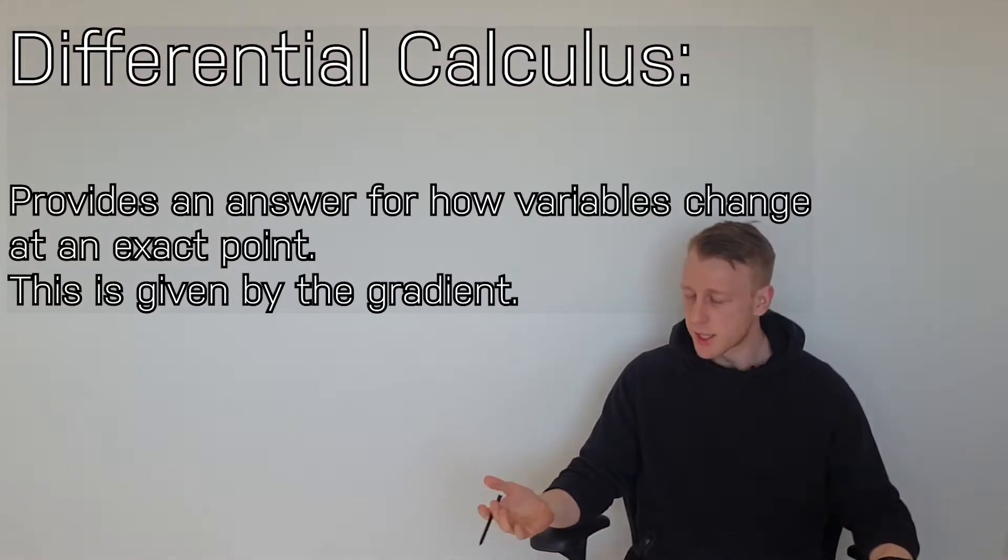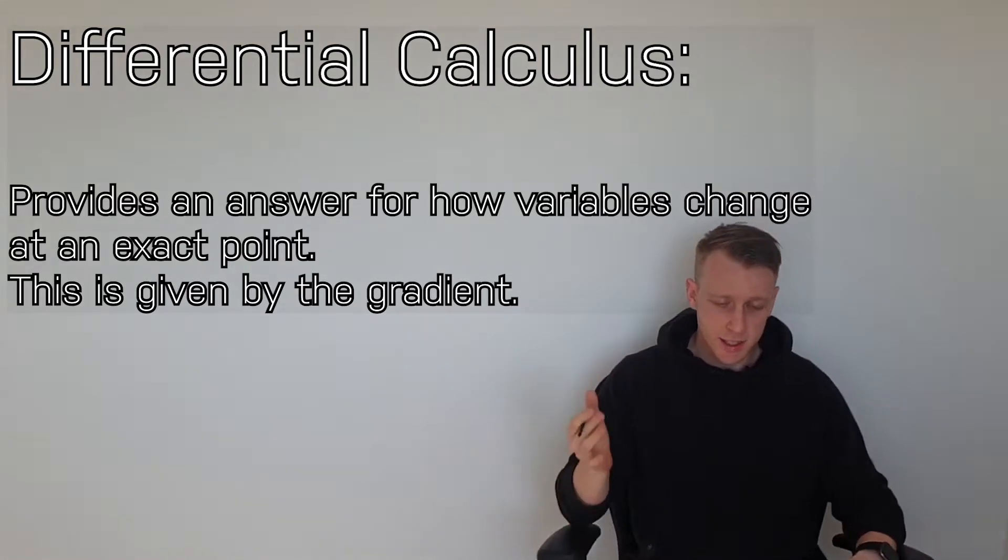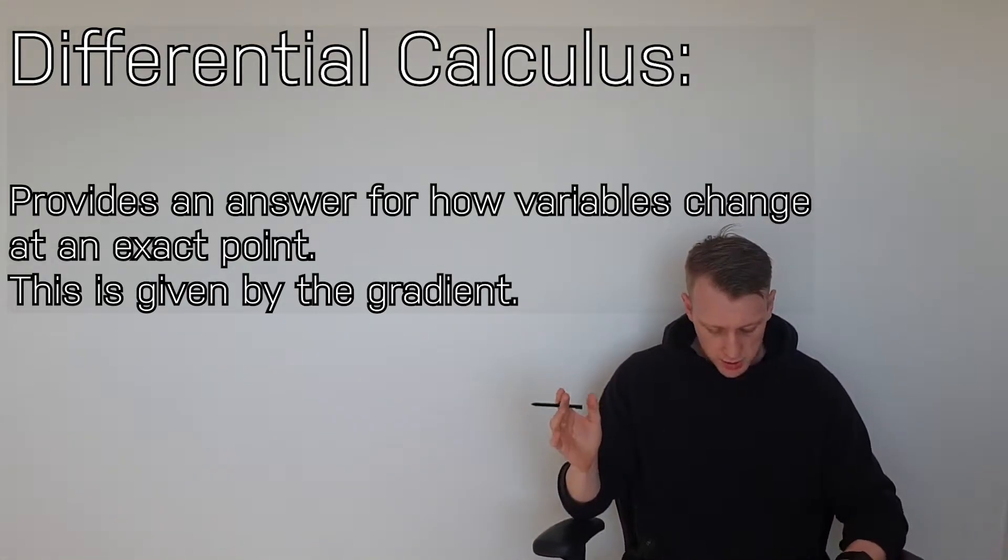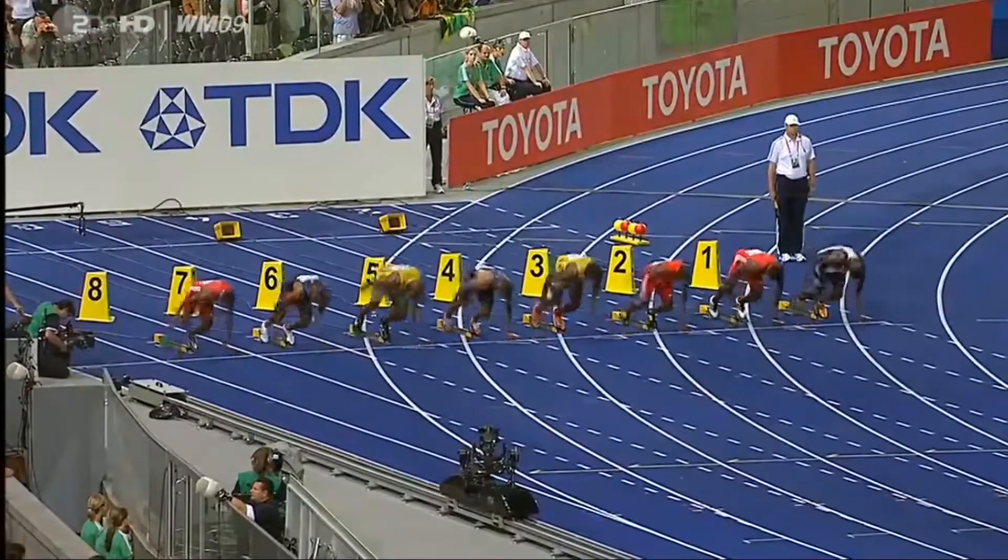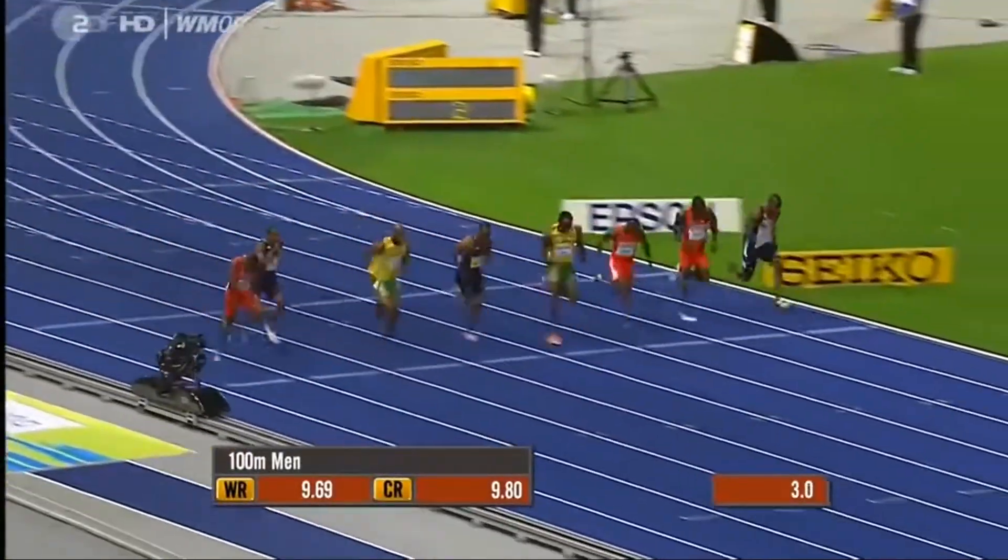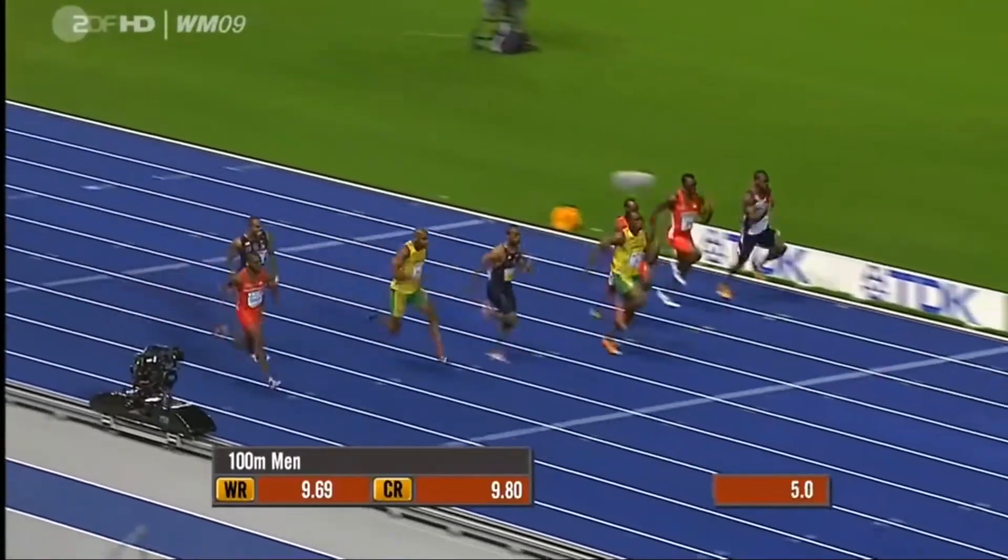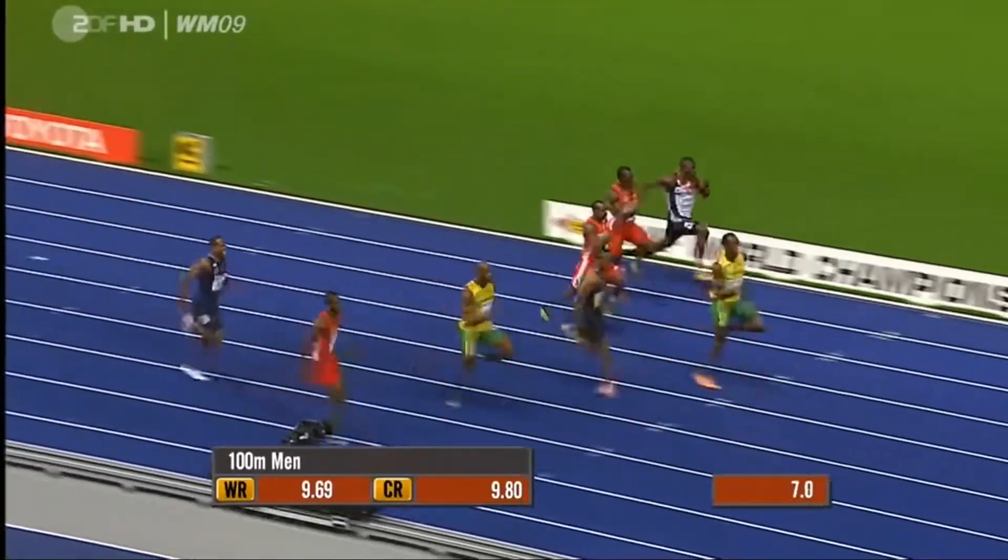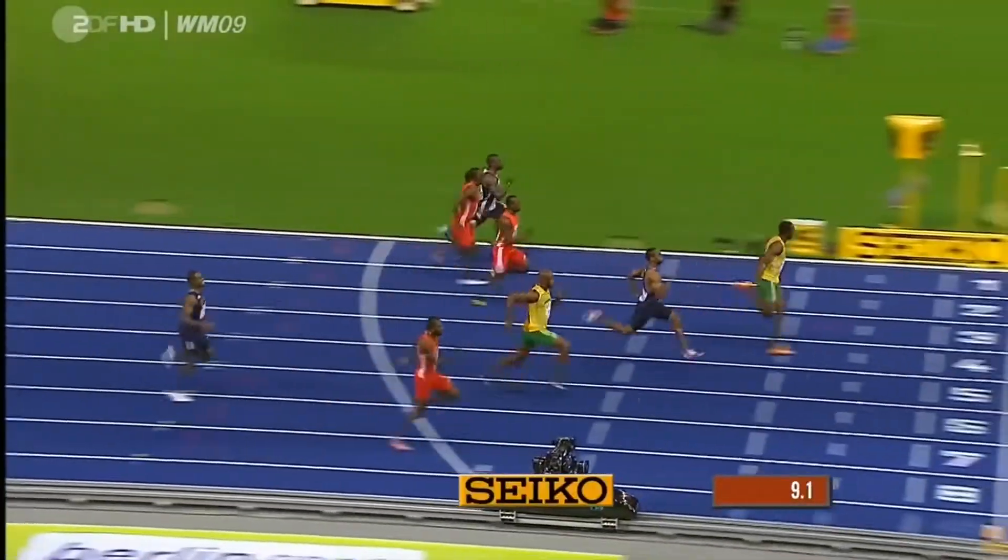Rather than starting off by speaking abstractly, let's look at a concrete example. Consider Usain Bolt sprinting 100 meters. I think we can all agree that he's not running at 35 kilometers an hour for the entire race. For example, his first 20 meters is not going to be as fast as his last 20 meters.